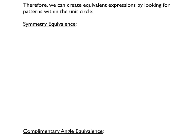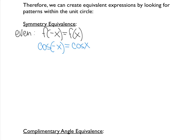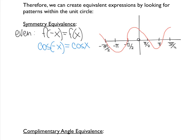We can create equivalent expressions by looking for patterns within the unit circle. If we remember from the beginning of the year, we talked about odd and even functions. An even function occurs when you plug in a negative value for x and you get your original function. An example in trig would be the cosine function — graphically it has symmetry about the y-axis, so every negative x value has a corresponding y value on the other side that's exactly the same.